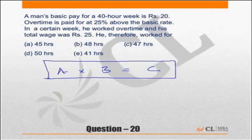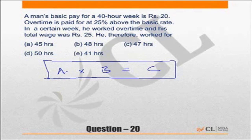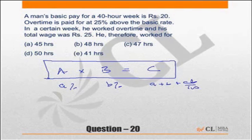Just to be sure you are comfortable with this concept: I can apply percentage change. If A changes by a percent and B changes by b percent, then C will change by (a + b + ab/100) percent. Another way to do it is to assume original A = 10, B = 10, so the original product is 100.